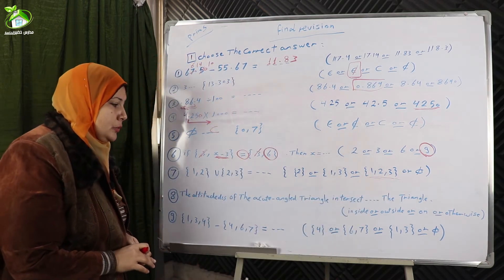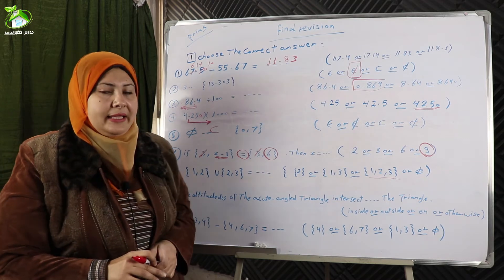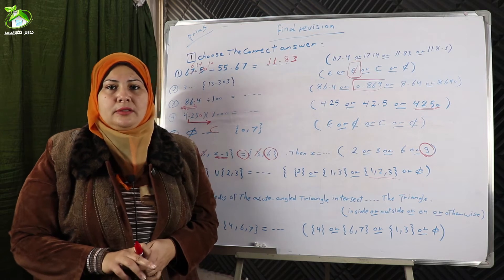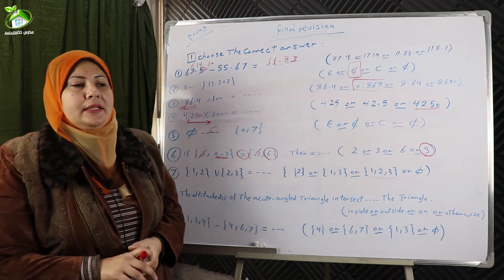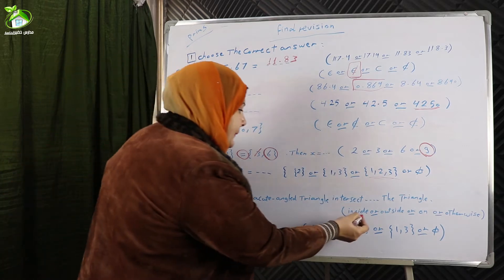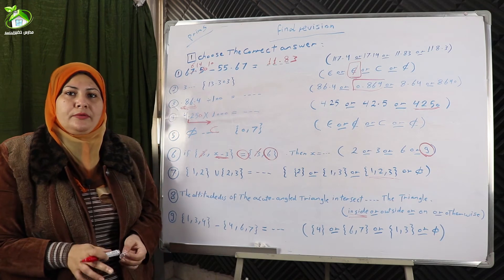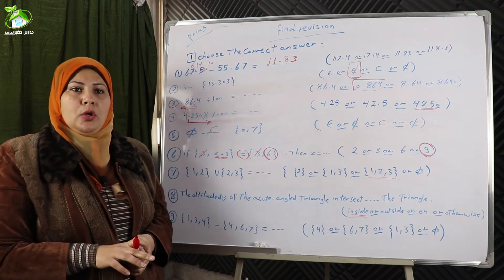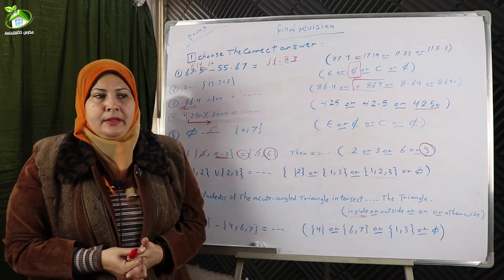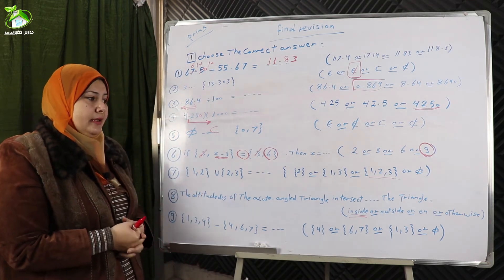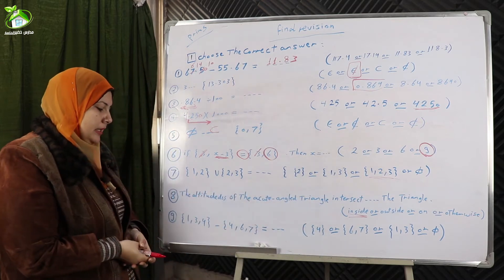Number eight: the altitudes of an acute-angled triangle intersect. The altitudes of an acute-angled triangle intersect at one point inside the triangle. We said before that altitudes of an obtuse-angled triangle intersect at one point outside the triangle, but for an acute-angled triangle, they intersect inside.